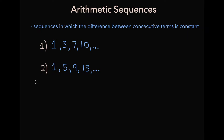Let's consider two sequences and try to determine whether each one is arithmetic or not. For the first sequence, to go from 1 to 3 you need to add 2, from 3 to 7 you need to add 4, and from 7 to 10 you need to add 3. Because the difference between consecutive terms is changing, this sequence is not an arithmetic sequence.